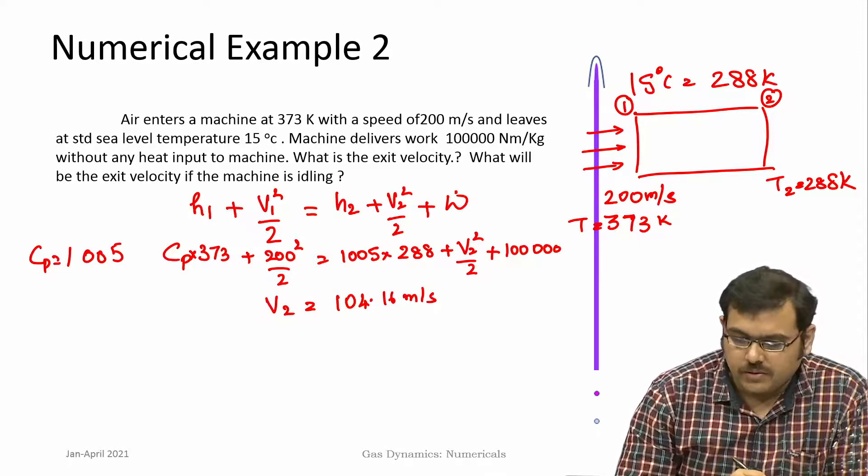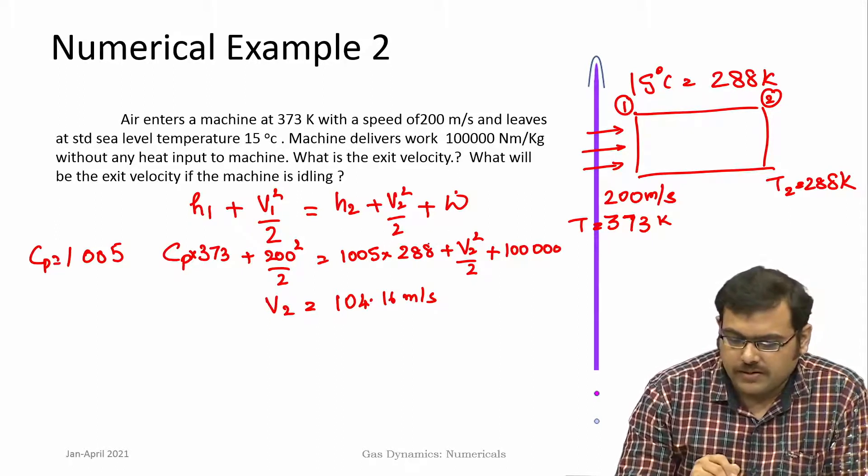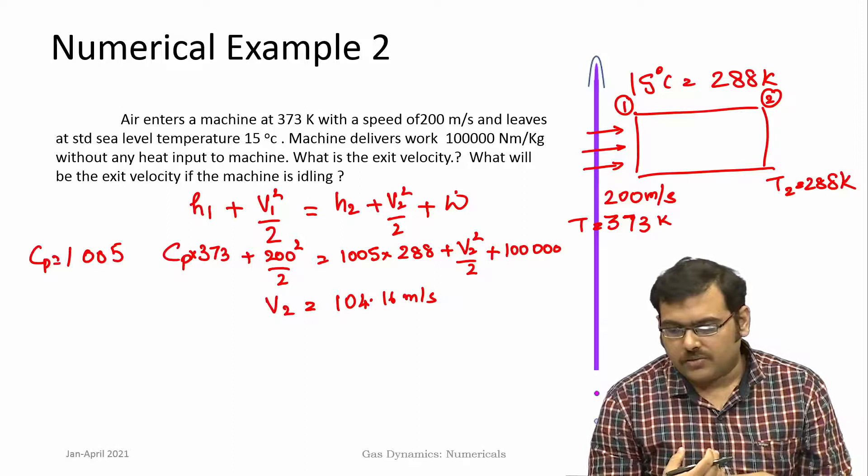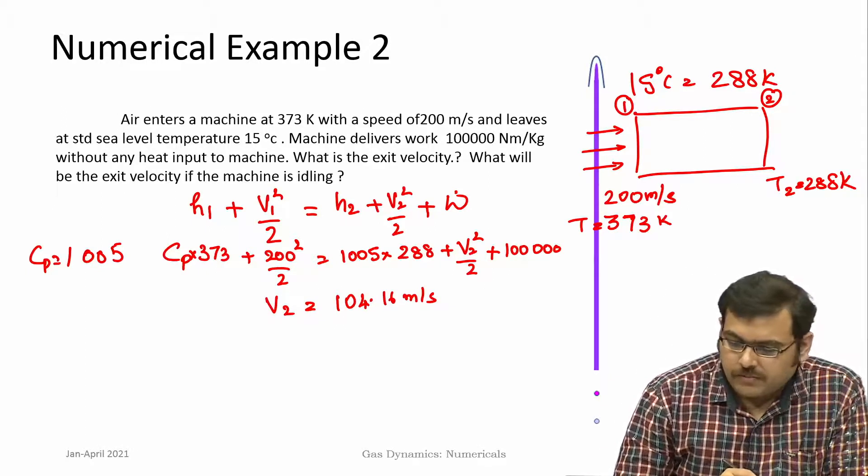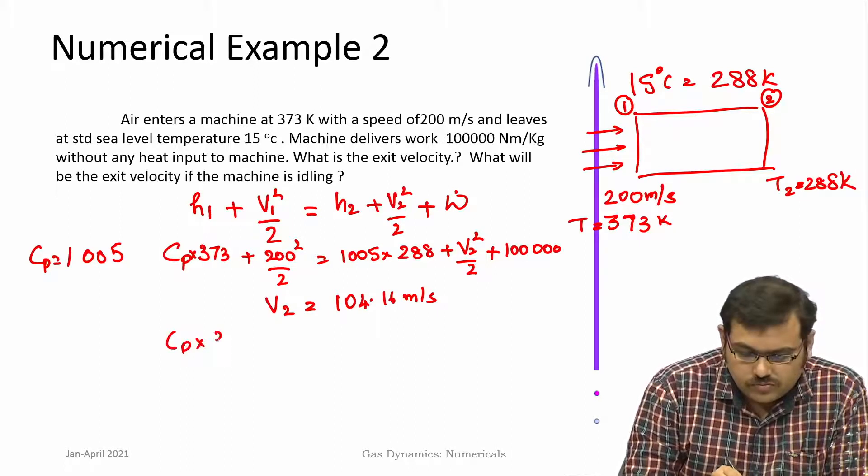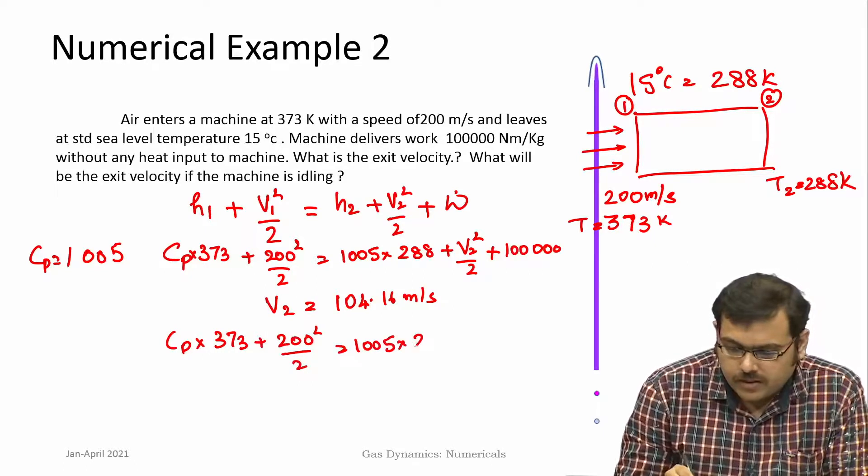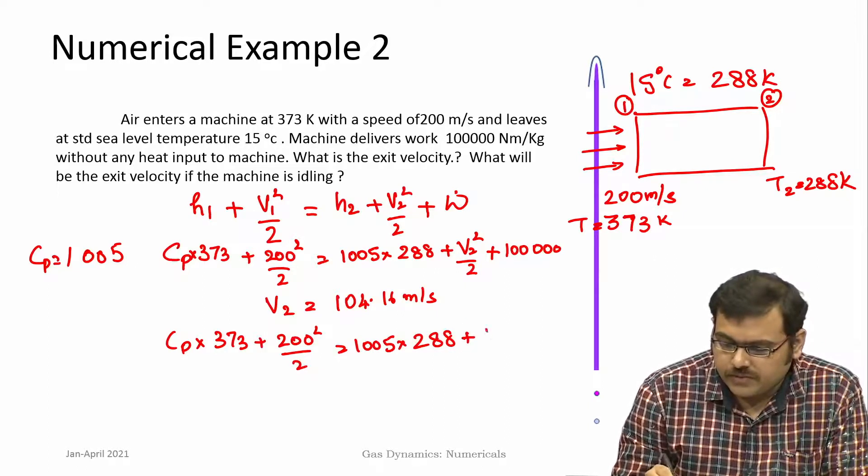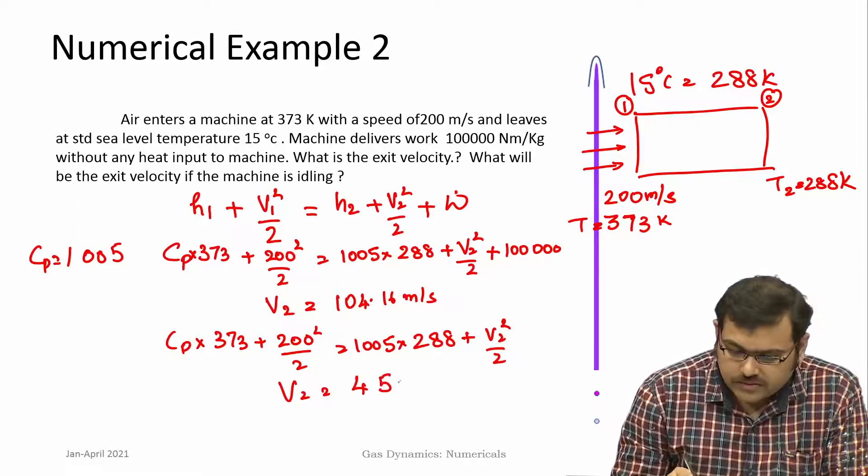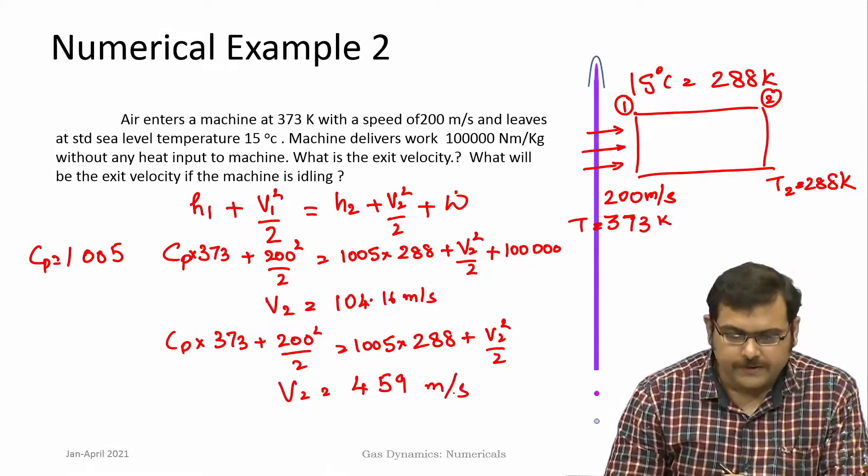If it is idling, when there is no work taken out, the equation still remains the same, which is the conservation of energy. Now that no work is being taken out of the machine and if it still continues to exit at the same temperature, then it would have much higher velocities. The velocity can be much higher, which is around 459 meters per second.